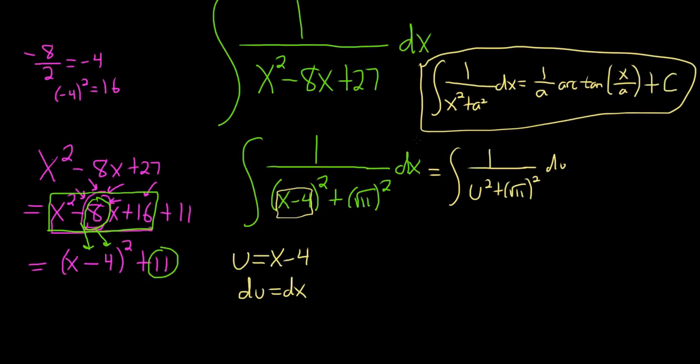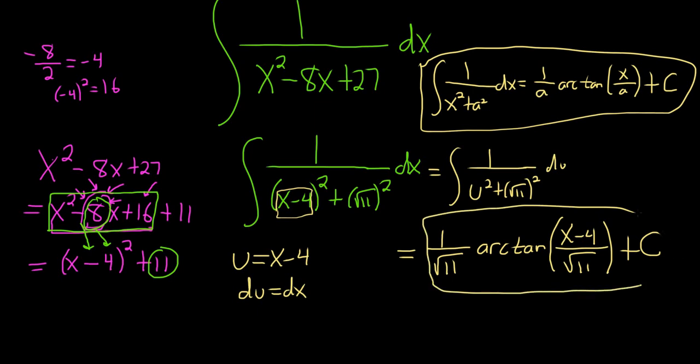So this is equal to, so it's 1 over a. So 1 over the square root of 11, arctangent of u over a. I'll go ahead and skip a step here. So u is x minus 4. So x minus 4, that's our u. And then a is the square root of 11. And then we have our plus C. And that would be the final answer.